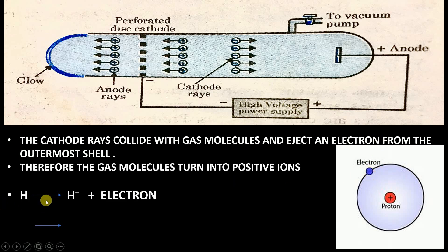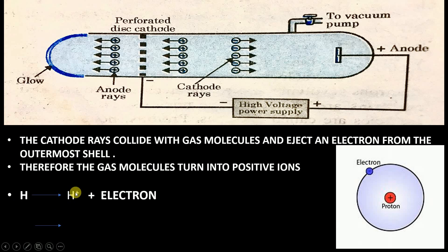The hydrogen atom gives away one electron; since an electron is ejected from the hydrogen atom, this hydrogen atom now becomes H+. One plus is written because only one electron is ejected by one hydrogen atom. Therefore, the gas molecules turn into positive ions — that is, the hydrogen gas molecules turn into positive ions.